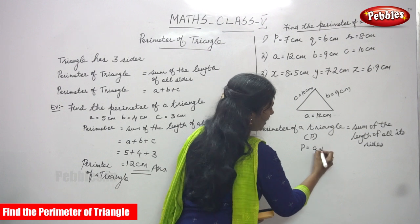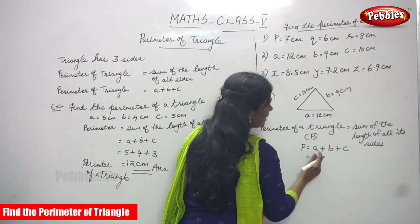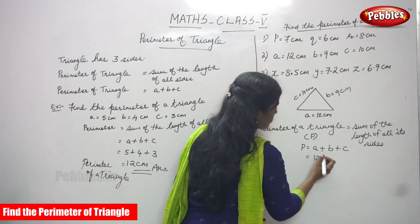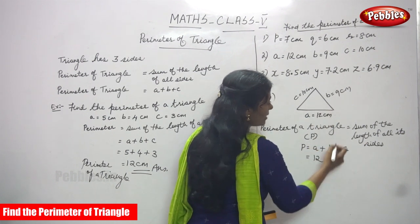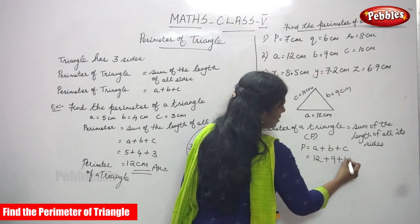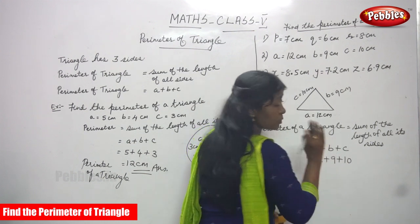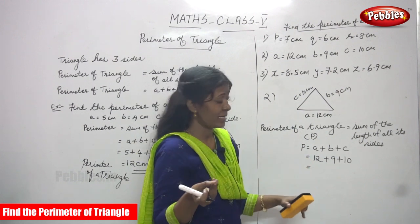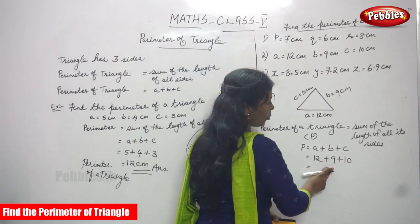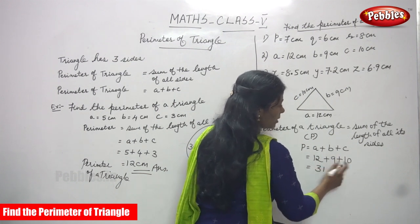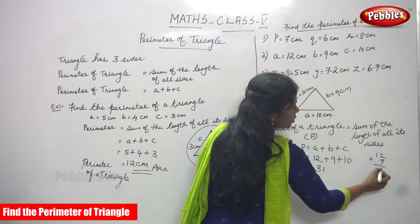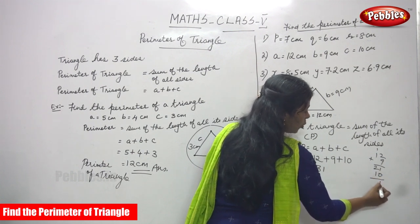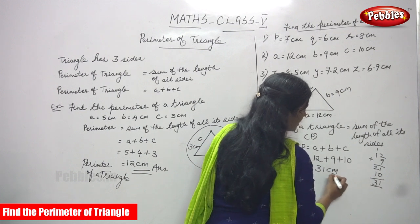We substitute the values of A, B, and C. The value of A is 12, B is 9, and C is 10, so P equals 12 plus 9 plus 10. First add 12 plus 9 equals 21, then 21 plus 10 equals 31. So the perimeter of the triangle is 31 centimeters.